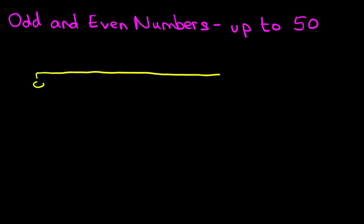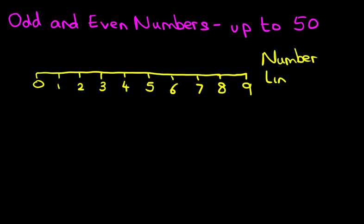We're going to start at 0, 1, 2, 3, 4, 5, 6, 7, 8 and 9. So this is our number line from 0 to 9.